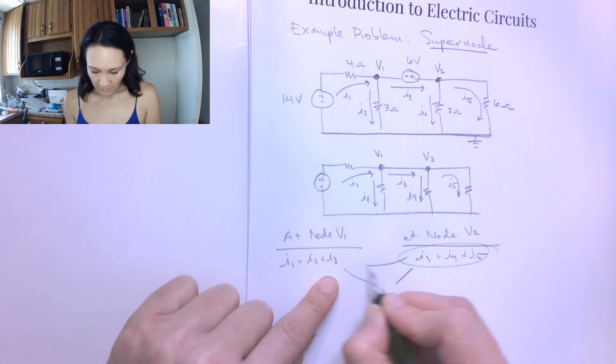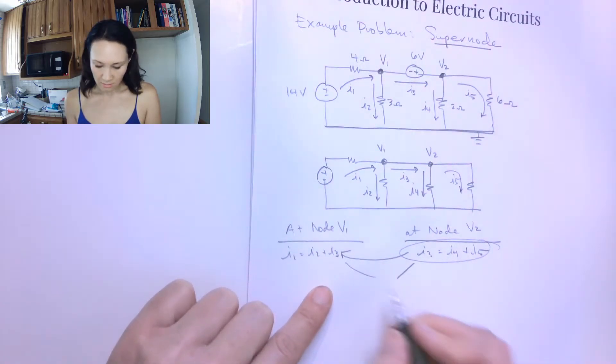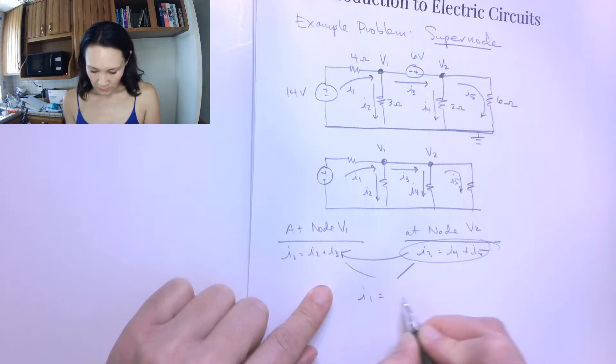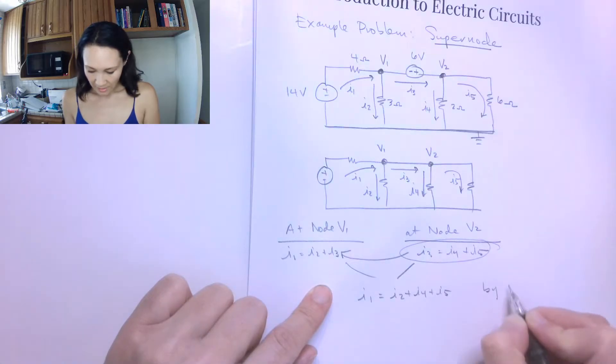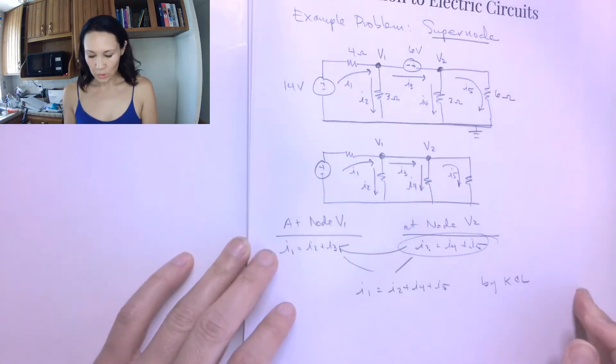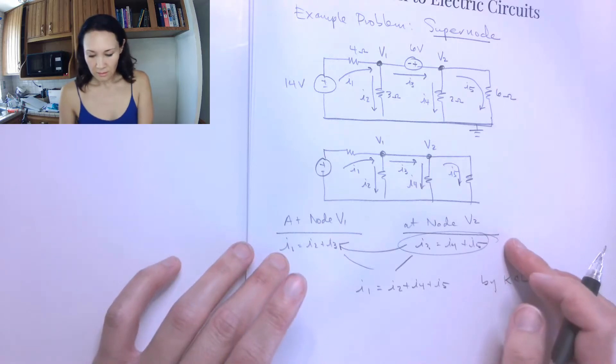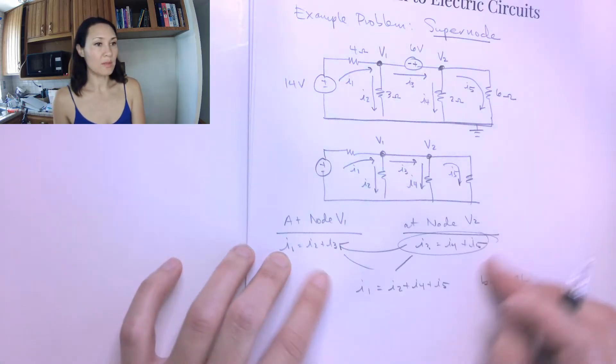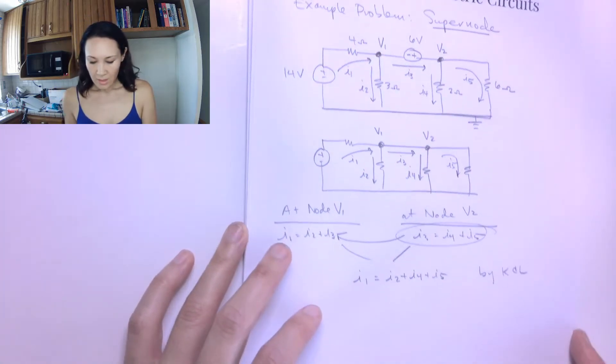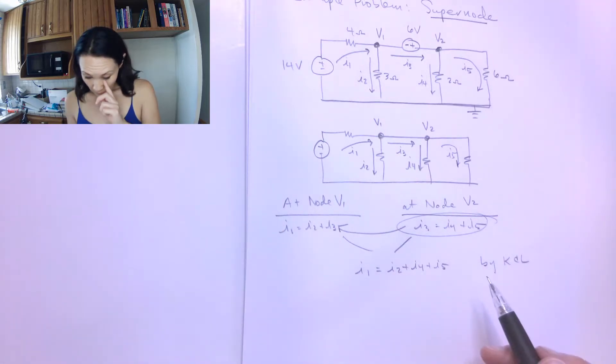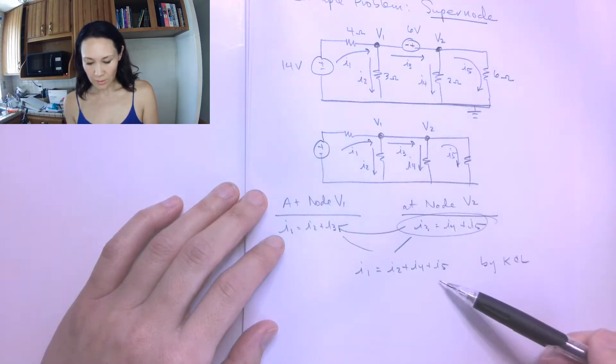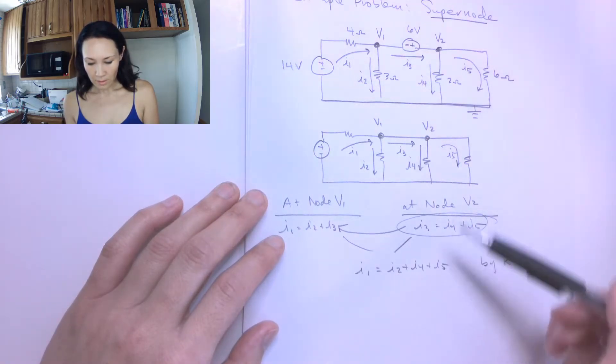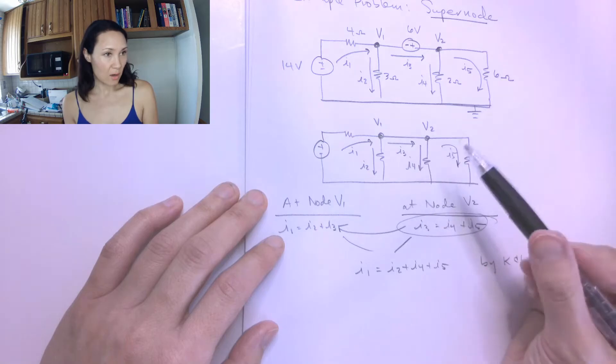Now I can combine these. If I substitute this in for that I3 there, I get I1 is equal to I2 plus I4 plus I5. And this is my KCL equation at basically both nodes, but then I combine it to be one. Now I'm going to use Ohm's law to replace all of these currents with an equation in terms of V and R.